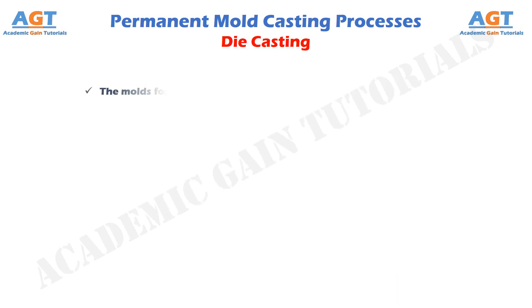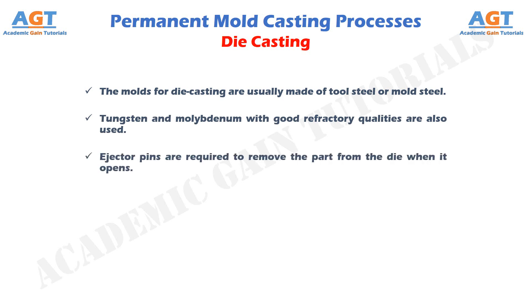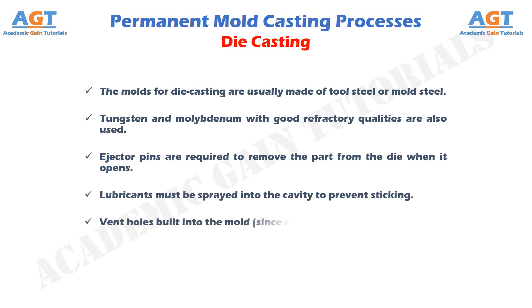The molds for die casting are usually made of tool steel or mold steel. Tungsten and molybdenum, with good refractory qualities, are also used. Ejector pins are required to remove the part from the die when it opens. Lubricants must be sprayed into the cavity to prevent sticking. Vent holes are built into the mold since there is no natural porosity.